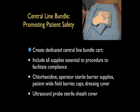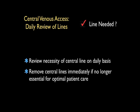The dedicated cart can include chlorhexidine swabs, all sterile barrier supplies for the operator such as cap, gown, and sterile gloves, the wide field barrier for the patient, sterile caps for the central venous catheter, and the Tegaderm dressing to cover the site. The cart should also include the ultrasound probe sterile sheath cover to facilitate sterile use of ultrasound during the procedure. A crucial step in critical care units is a daily review of all central venous lines — all non-essential lines should be immediately removed to decrease infection risk.